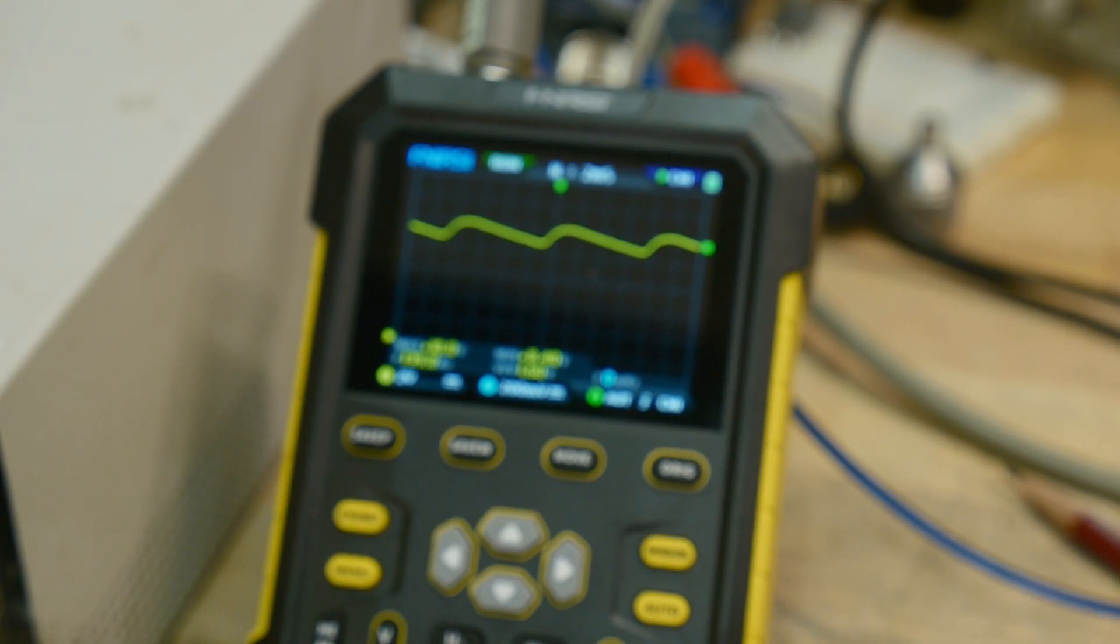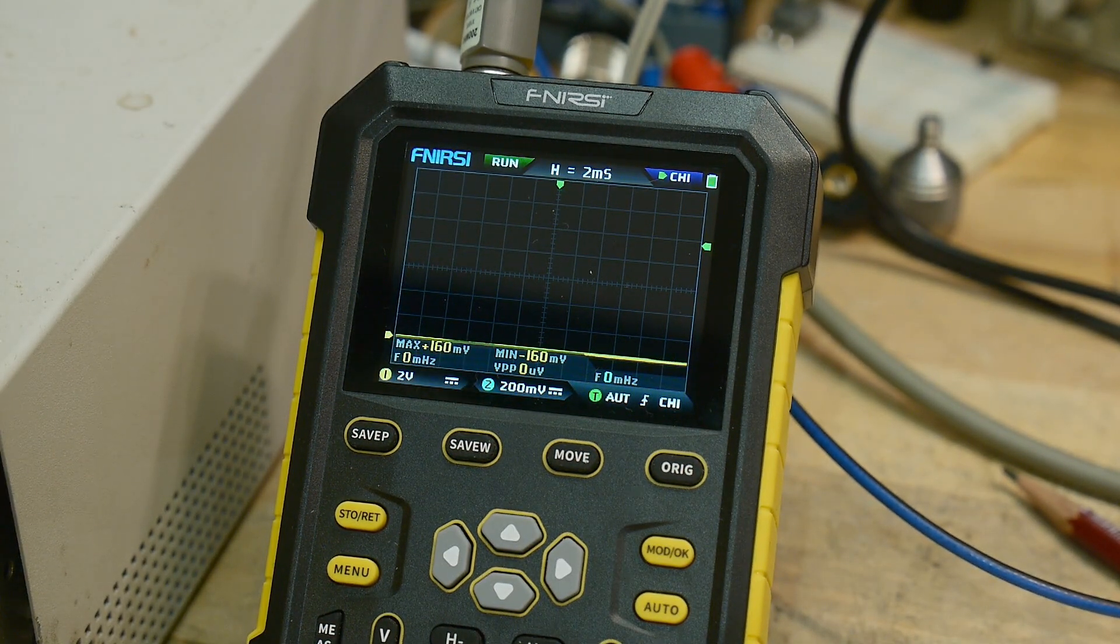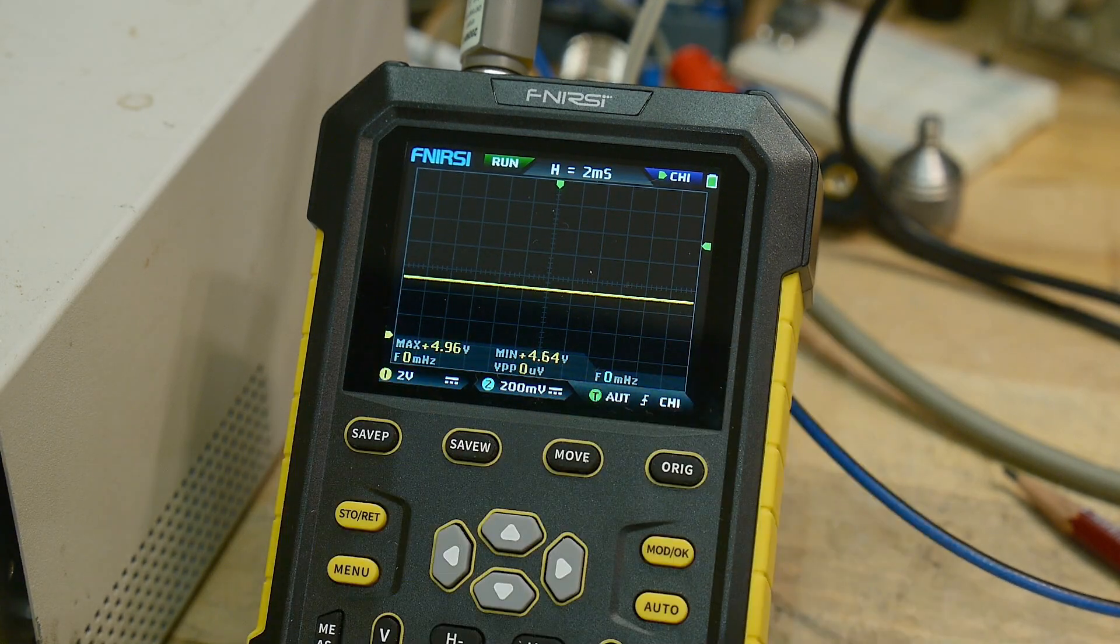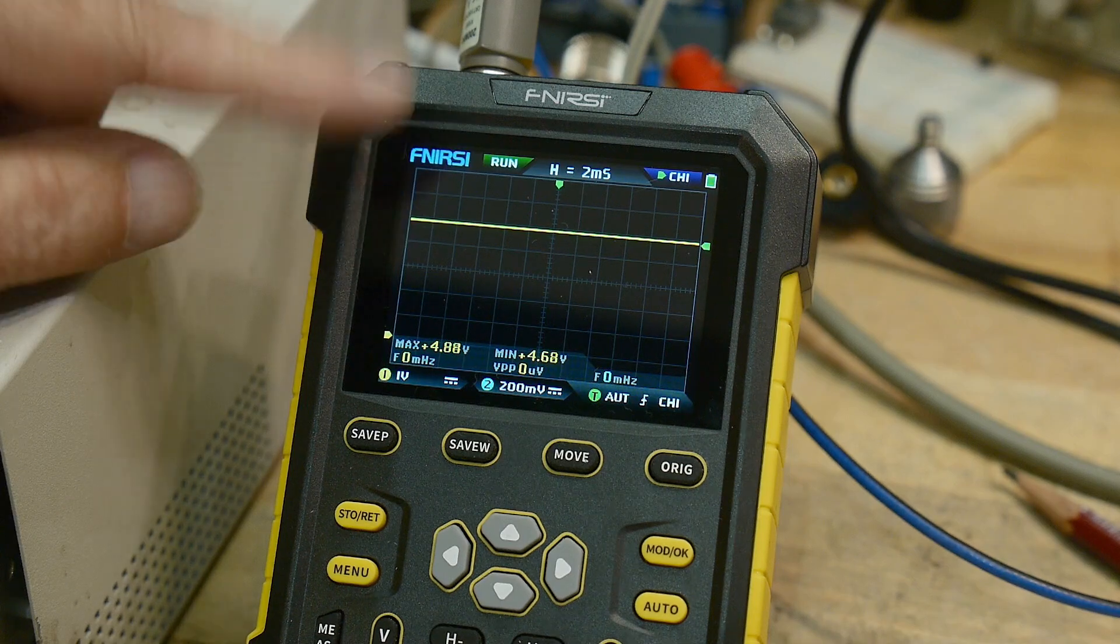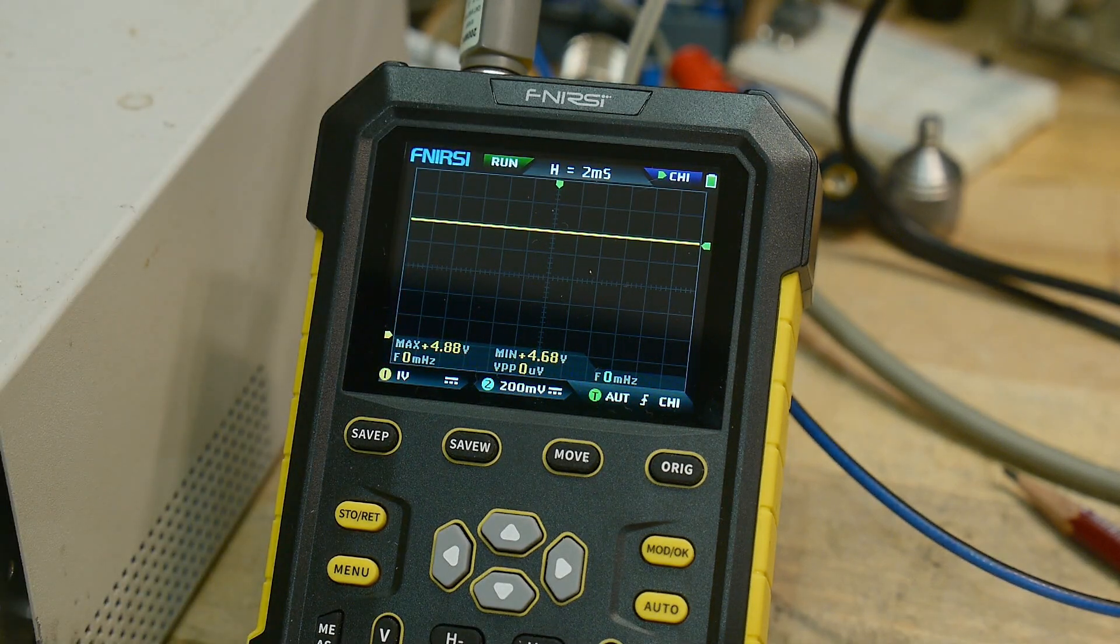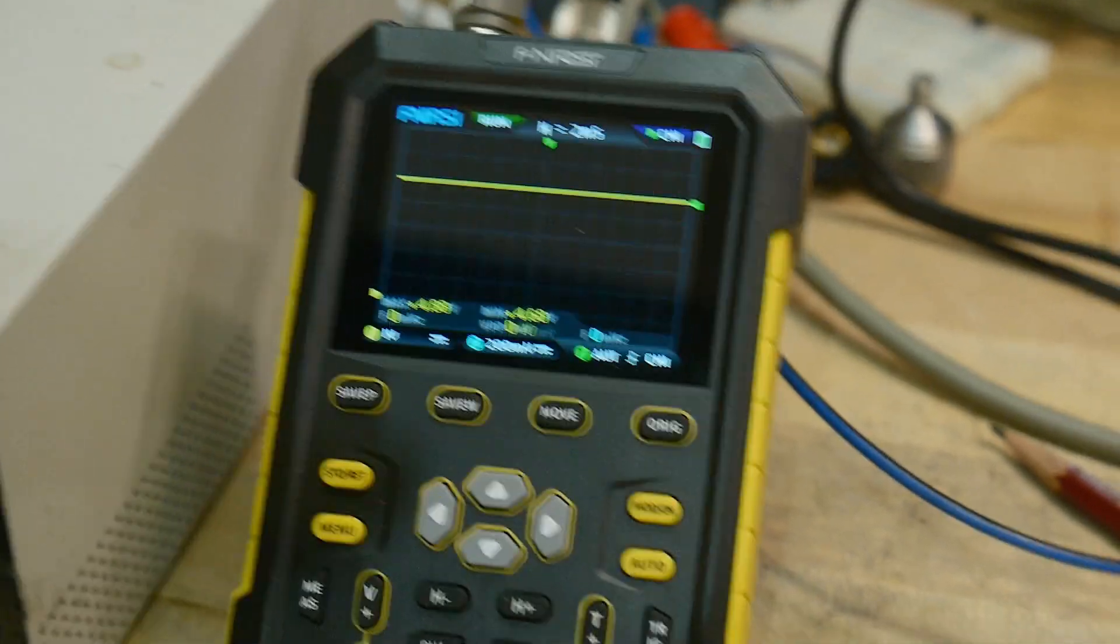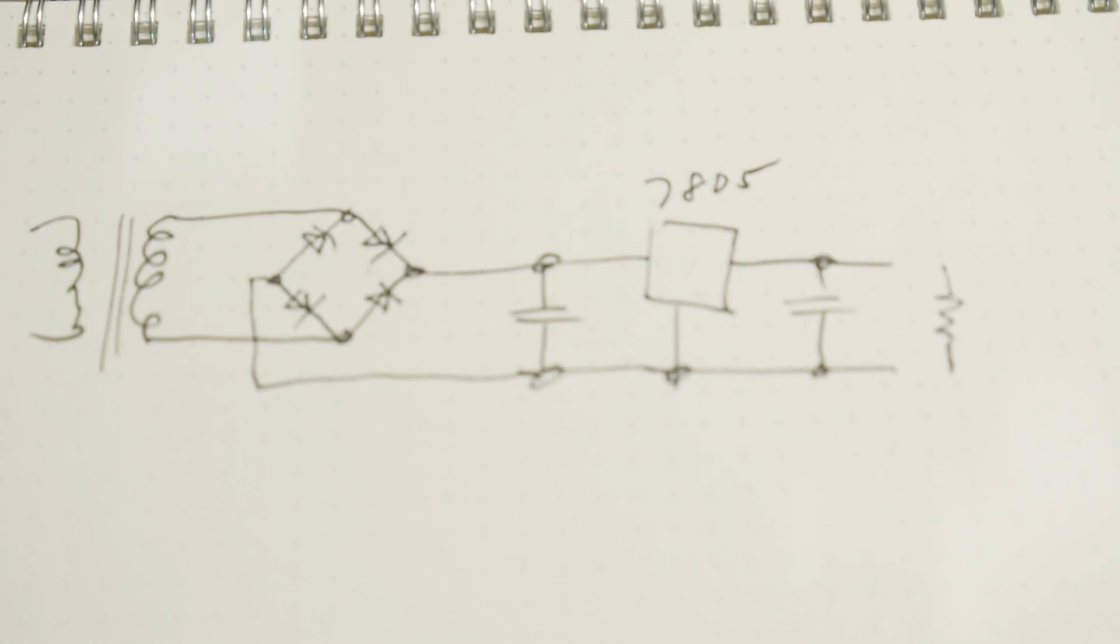So let's take a look at the output. Move my scope probe over, and yeah, now we have a perfect one, two, three, four, five volts. So that's really, really good. So we talked a little bit about that, but that's not what the video is about.